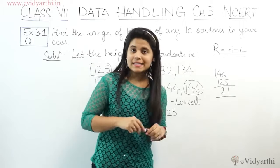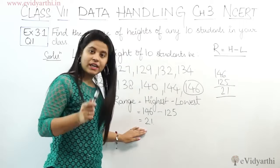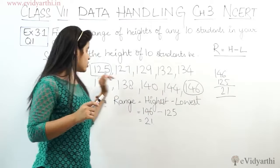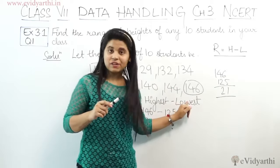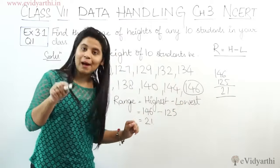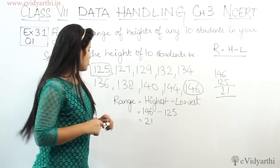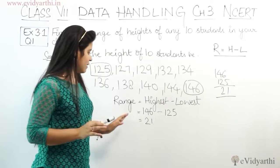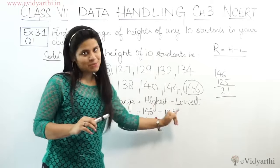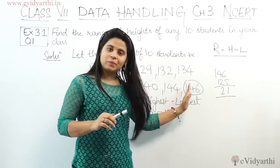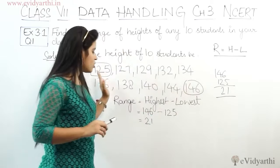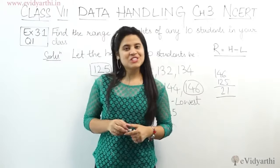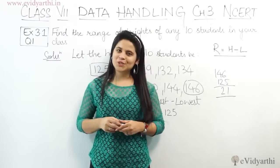Now in this question it's not necessary that my answer is the same as your answer, because our data will be different. My lowest and highest values will differ from yours. So our answers can be different due to the data. But the formula will be the same — highest minus lowest. You need to look at your own data, identify the highest and lowest numbers, and subtract them. This was question number 1. Let's start question number 2.